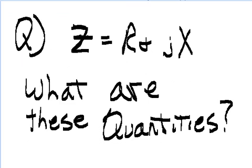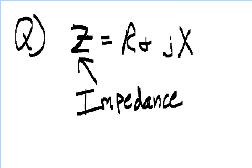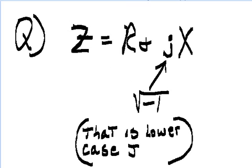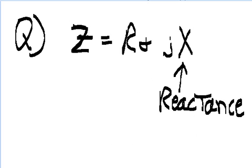Z equals R plus jX. What are these quantities? Z is impedance, R is resistance, j is radical negative 1—that is a lowercase j—X is reactance.